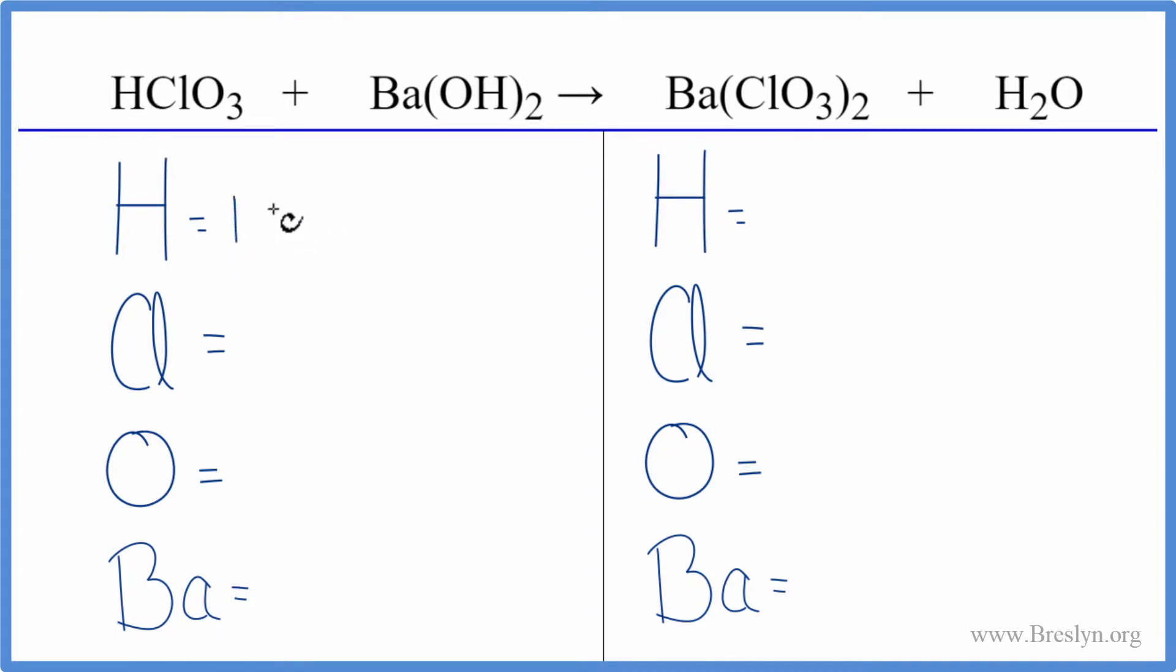We have one hydrogen plus we have this one hydrogen here times the two. So we have two hydrogens there, total of three. Chlorines, we have one.